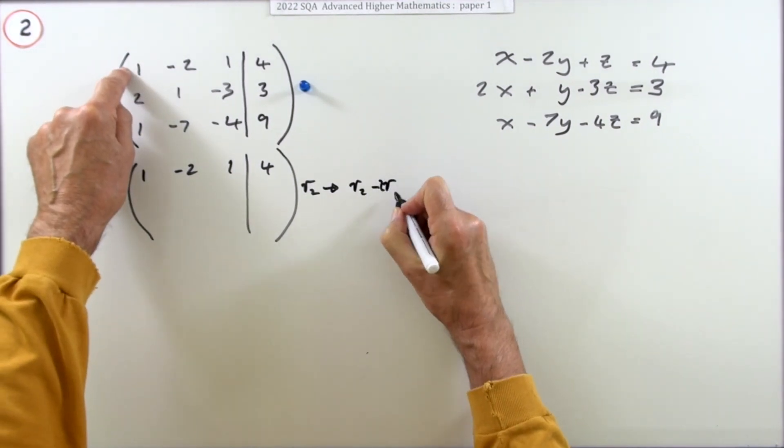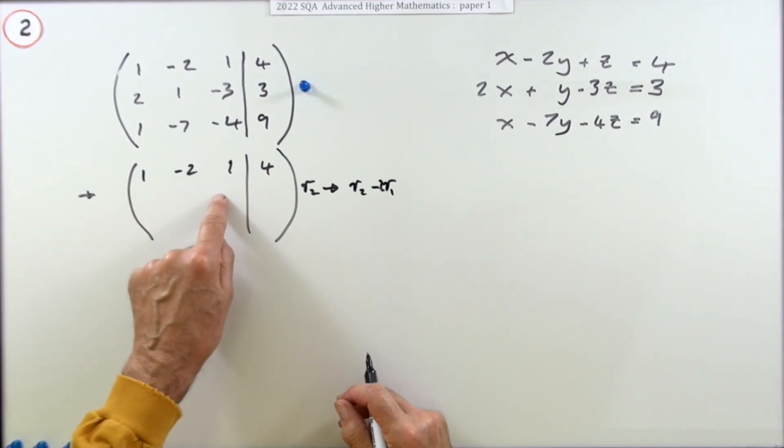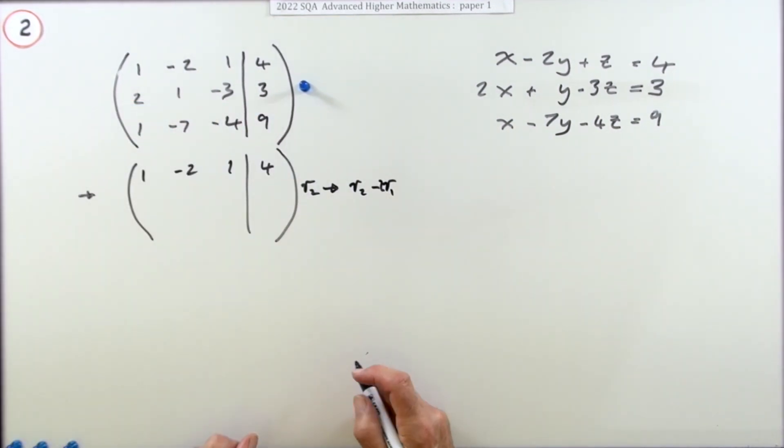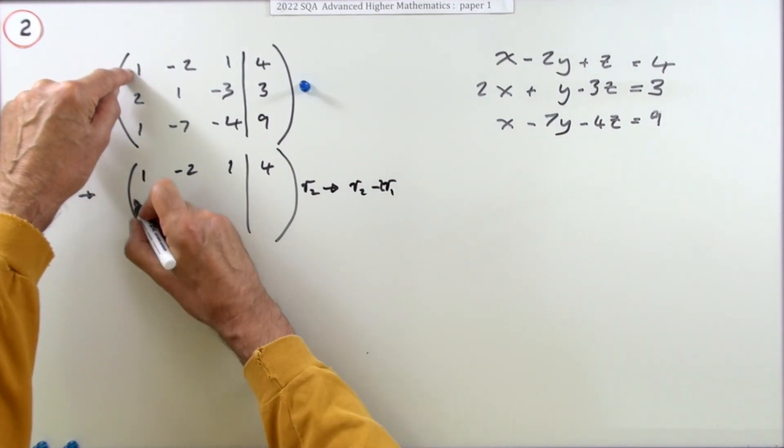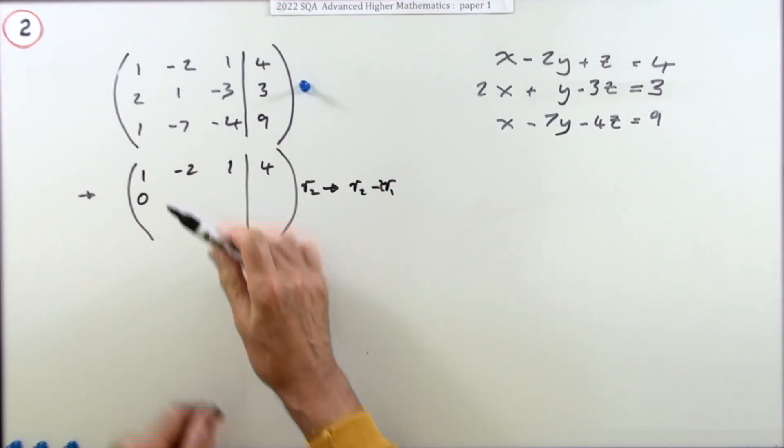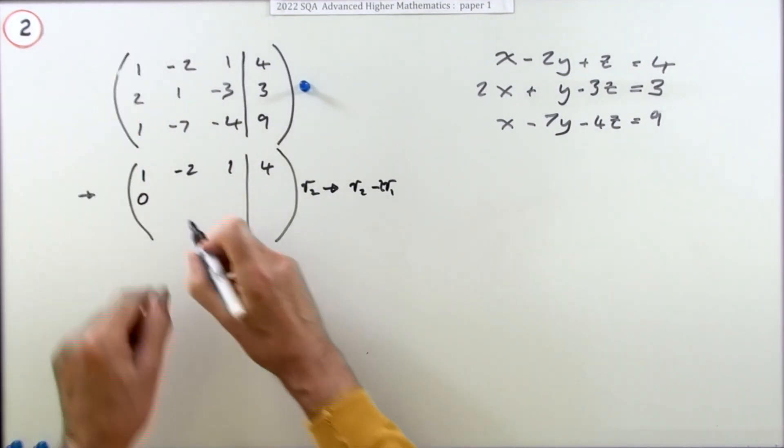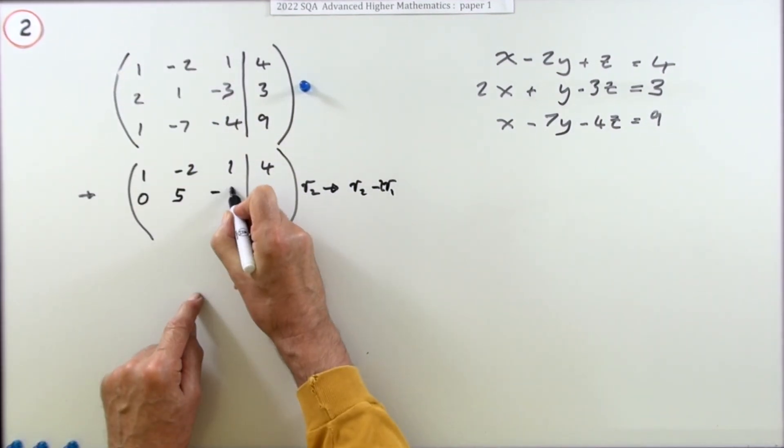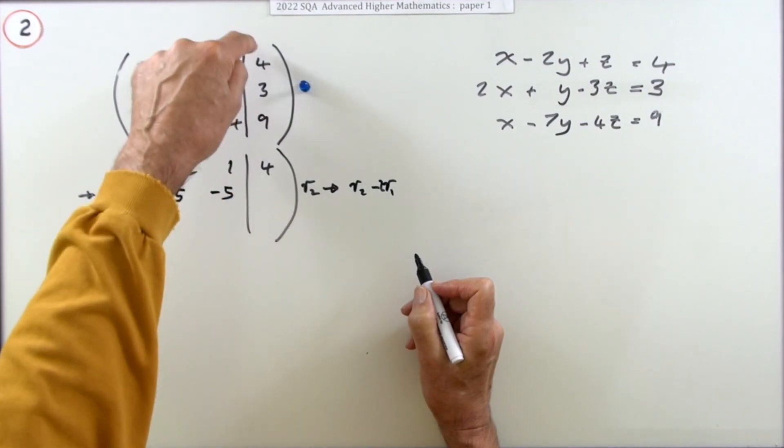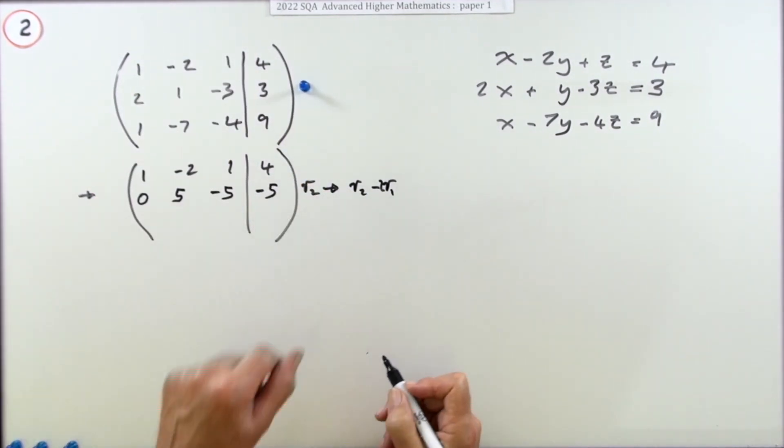I'm going to take this row two and transform that into row two minus two lots of row one. Write the answer here though instead of rubbing that out. So let's do that then: 2 take away 2 is 0 - that's the whole point, I want upper triangular form. 1 plus 4, that'll be 5. -3 take away 2: -5. 3 take away 8: -5.